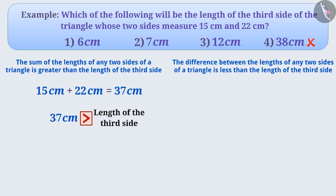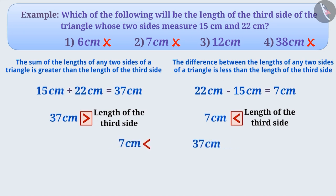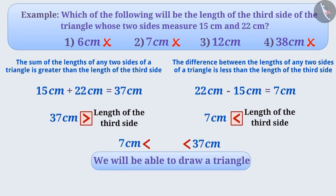We also see that the difference between the two sides of the triangle is 22 cm minus 15 cm, which equals 7 cm. Therefore, the length of the third side cannot be 7 cm or less — that is, option 2 and option 1 are also wrong answers. The length of the third side should be more than the difference but less than the sum of the lengths of the two sides. Therefore, if the length of the third side is more than 7 cm but less than 37 cm, only then we will be able to form a triangle.